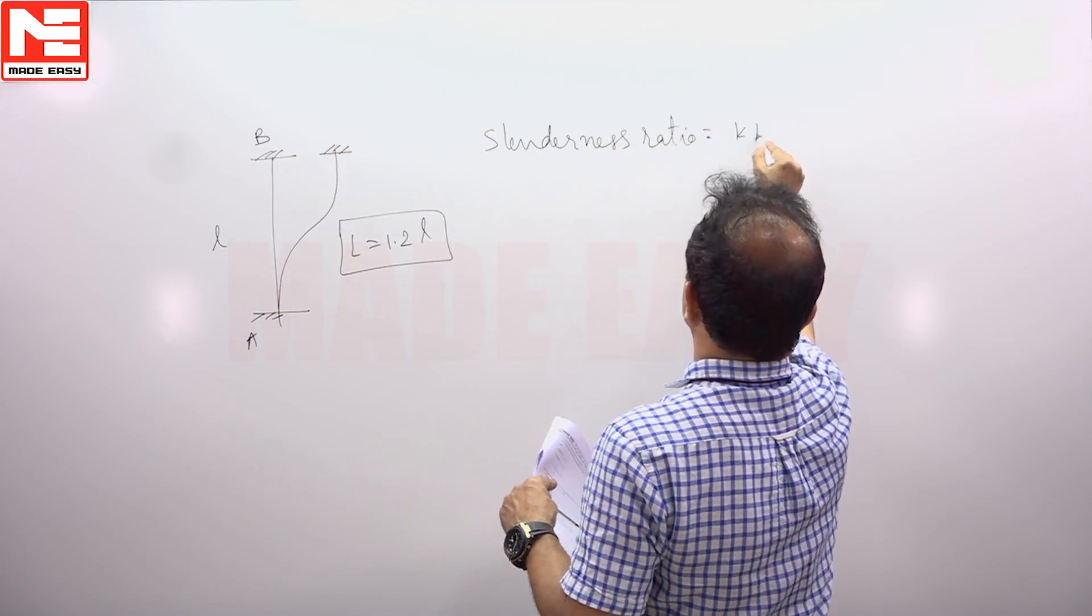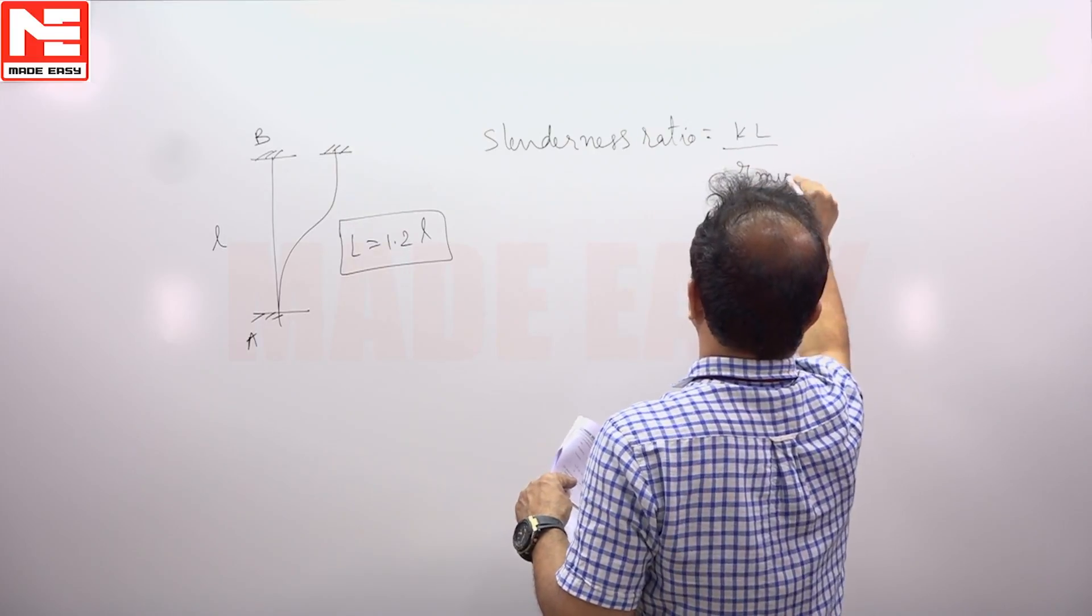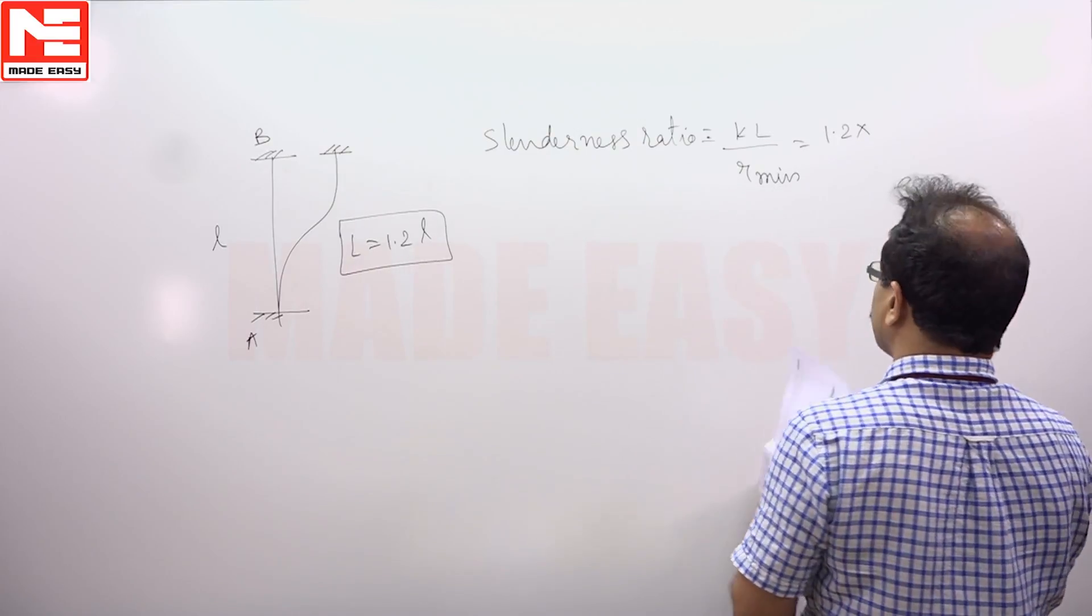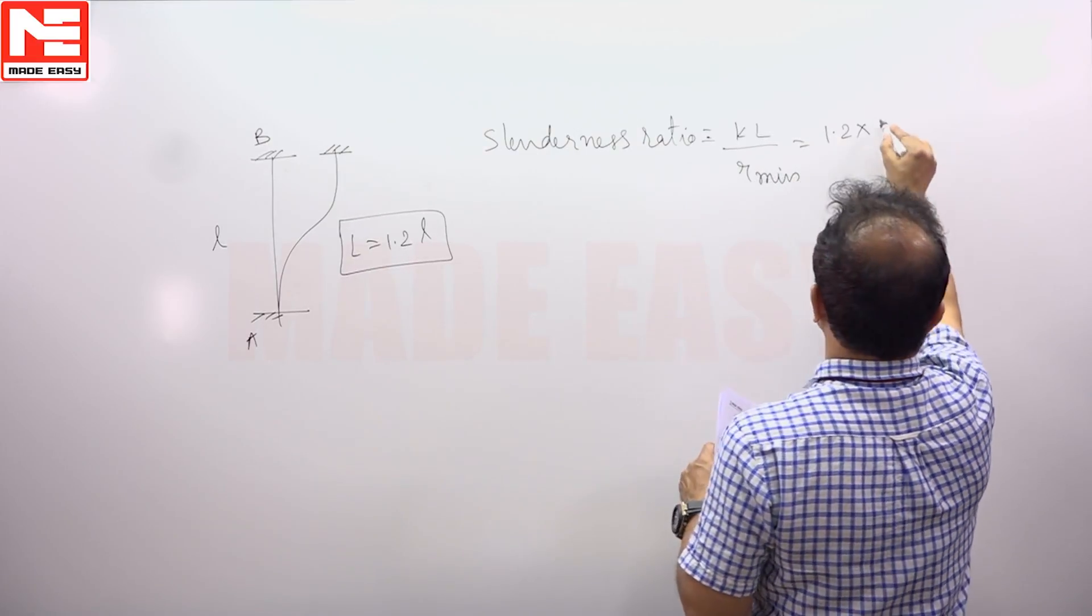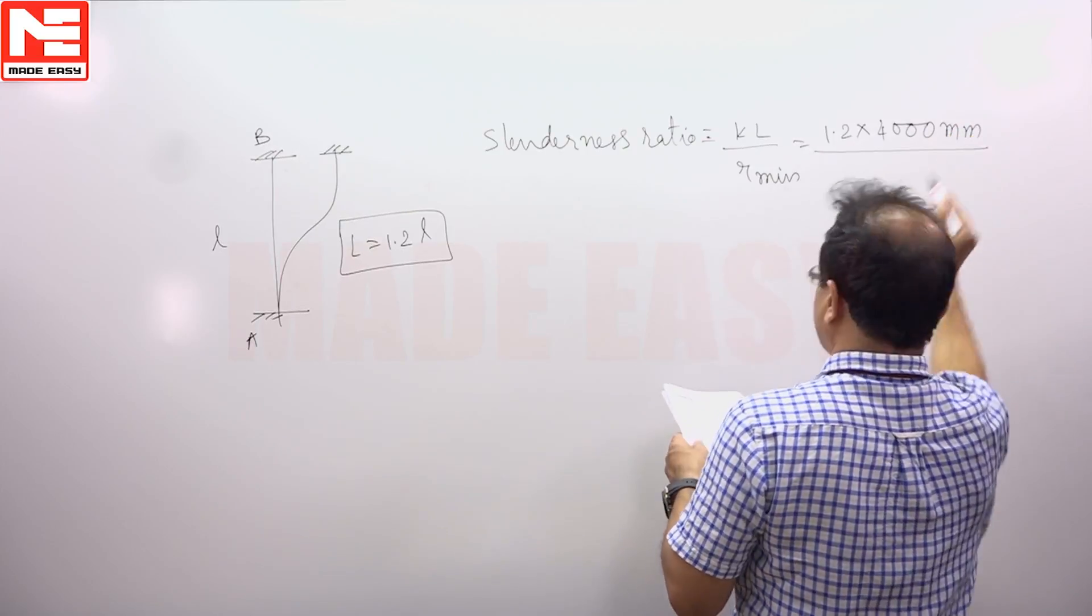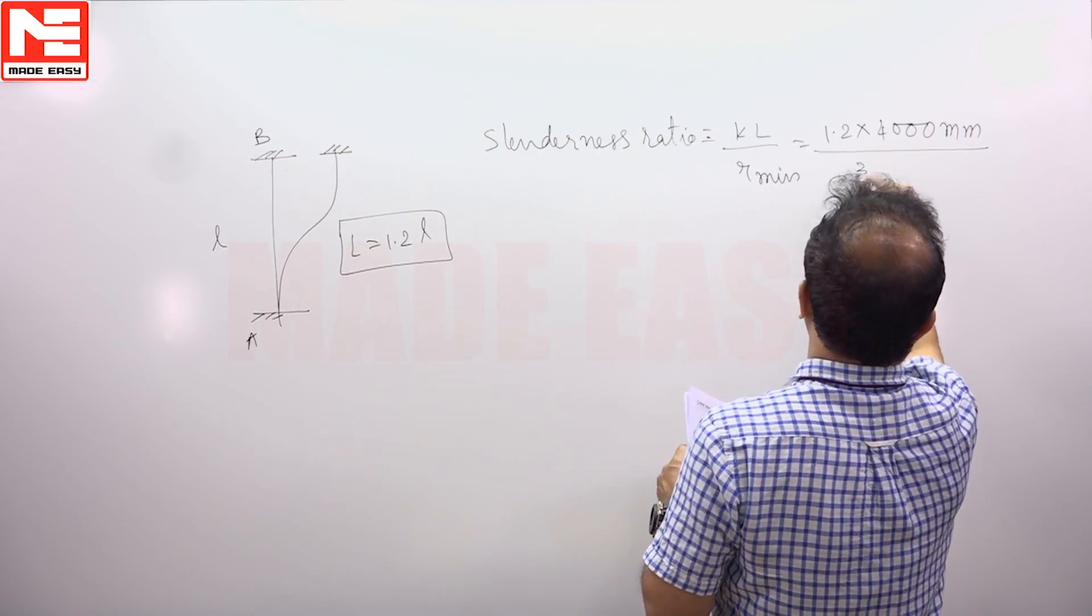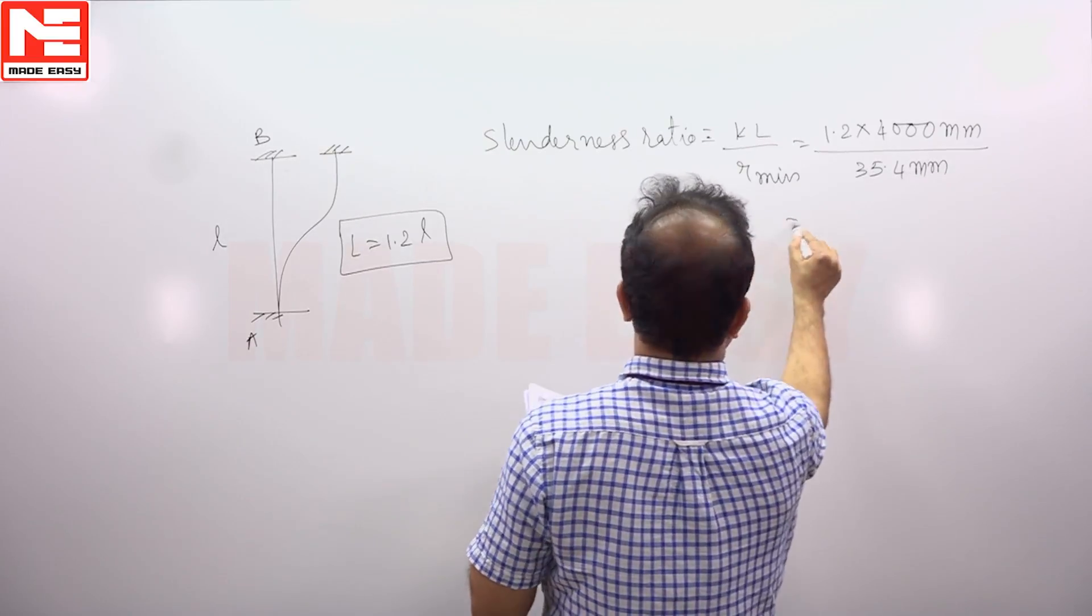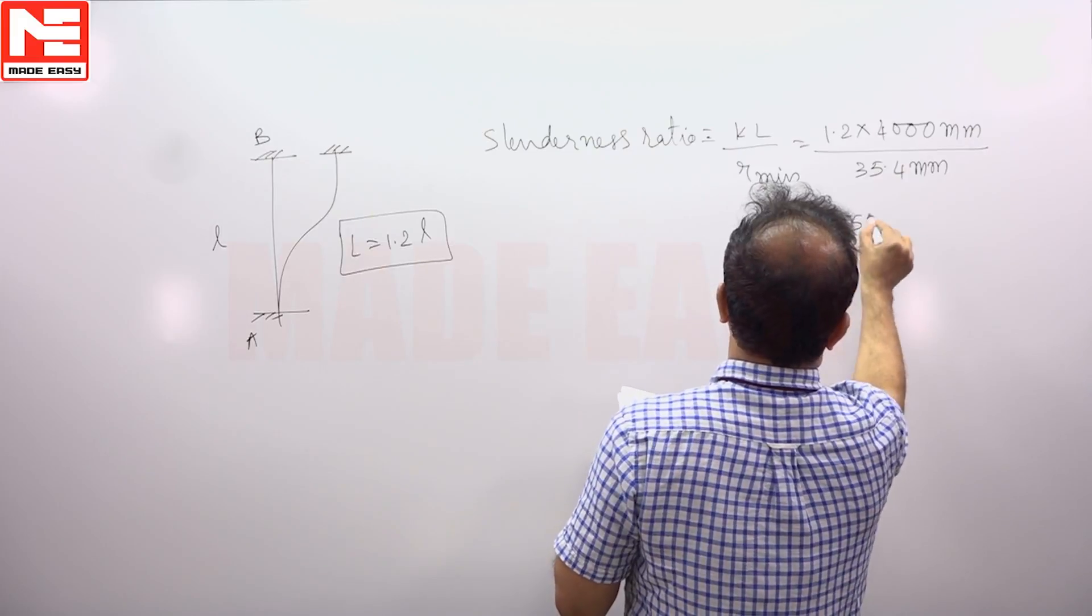Slenderness ratio is equal to KL by R minimum. K we have to take 1.2 and length of the column is given as 4 meters, so 4000 mm by R minimum given as 35.4. So we will get slenderness ratio 135.6.